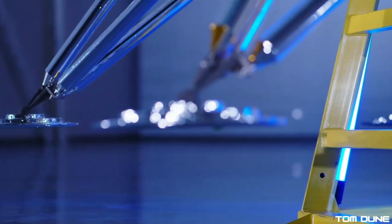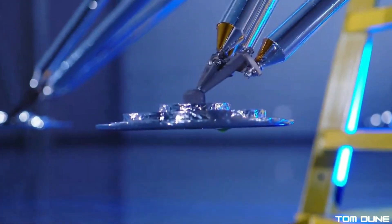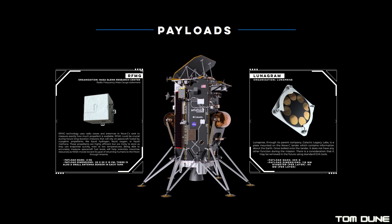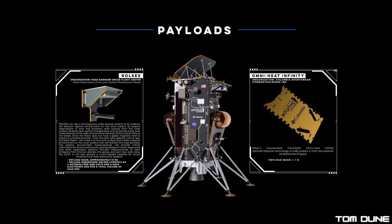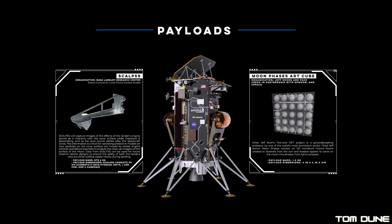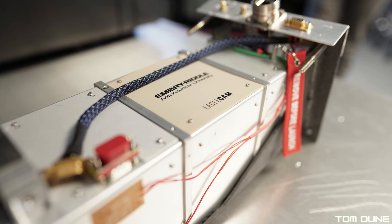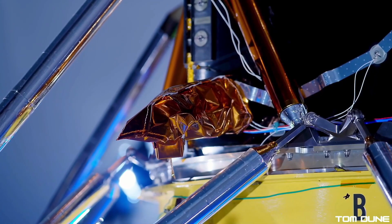Onboard Odysseus is a suite of scientific payloads from NASA, as well as commercial ones, including a new temperature-resistant cloth developed by Columbia Sportswear, 125 tiny moon sculptures sold via NFT, and even a camera that will deploy 100 feet above the surface to capture a third-person view of Odie as it lands.